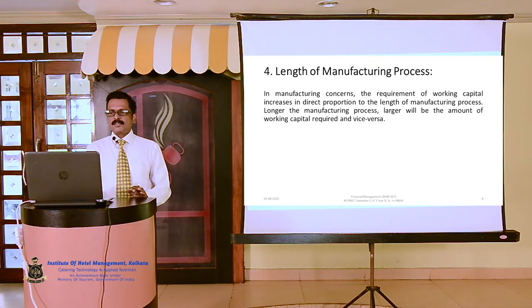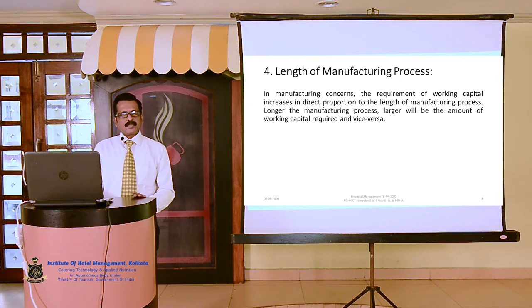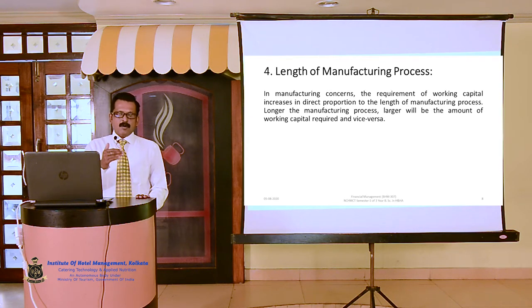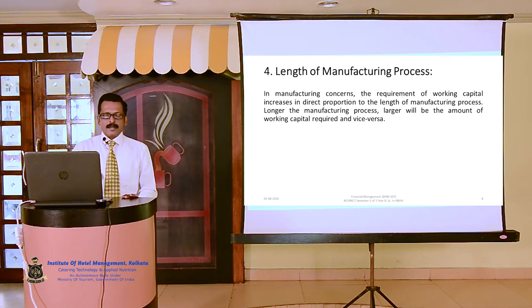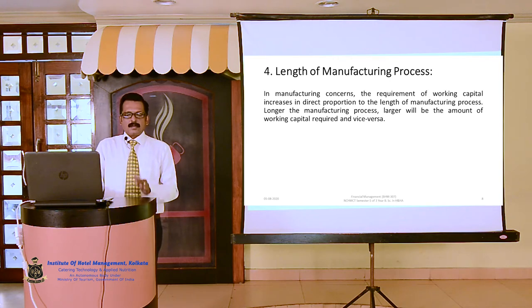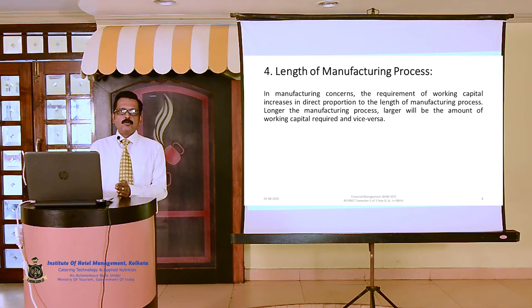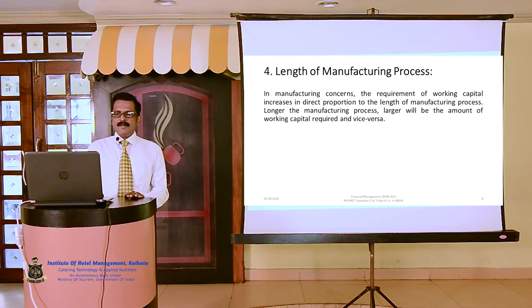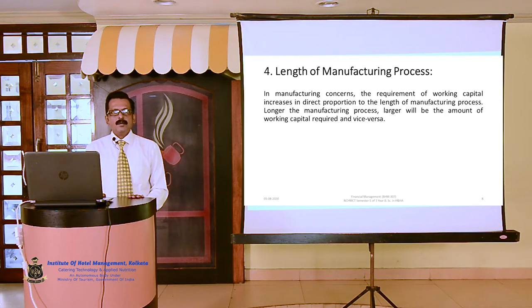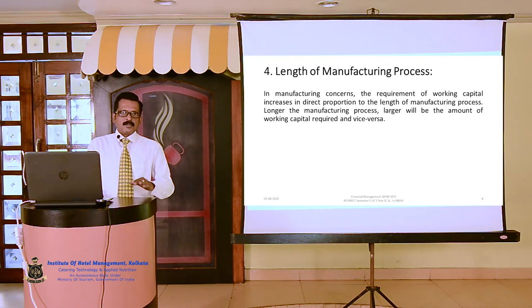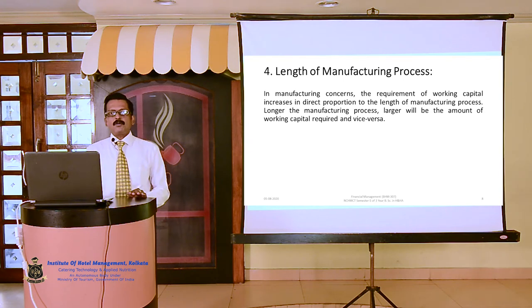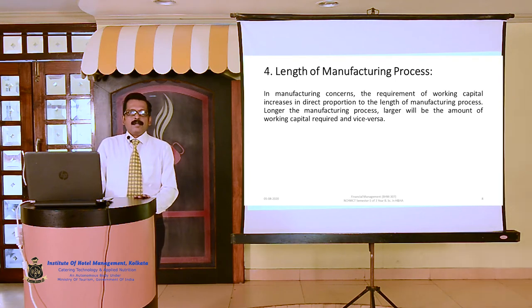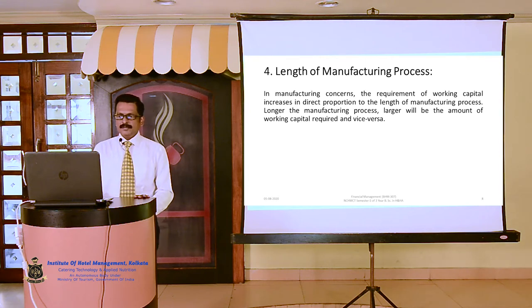Number four is length of manufacturing process, also known as the production cycle. Raw materials are converted into work-in-progress, which is then processed into finished goods. The time taken from raw materials to finished goods is called the length of the production cycle or manufacturing process. In manufacturing concerns, the requirement of working capital increases in direct proportion to the length of manufacturing process — the longer the process, the larger the amount of working capital required and vice versa. Therefore, it is advisable to choose the best alternative production process that can be completed in the shortest period of time.